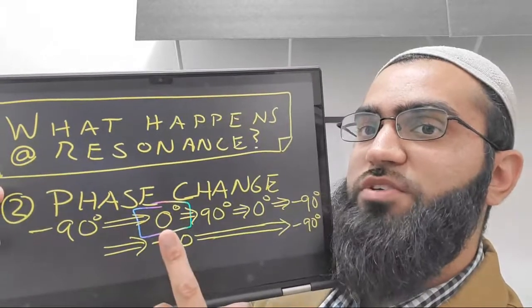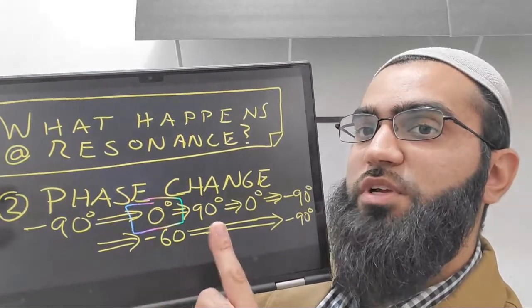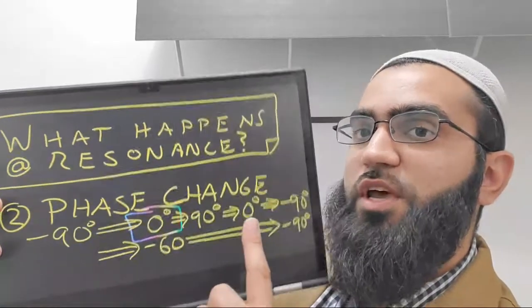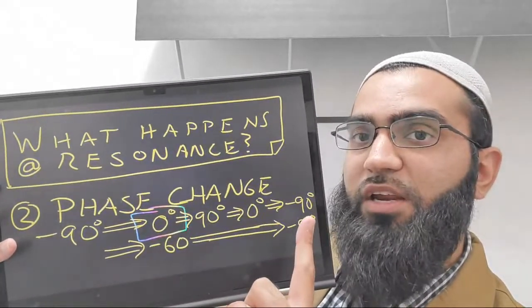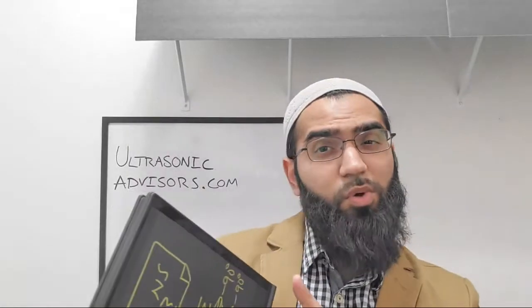As you can see here, for an ideal resonator with high coupling and high Q, you go from negative 90 degrees, which is the capacitive phase, to zero, to 90 which is the inductive.